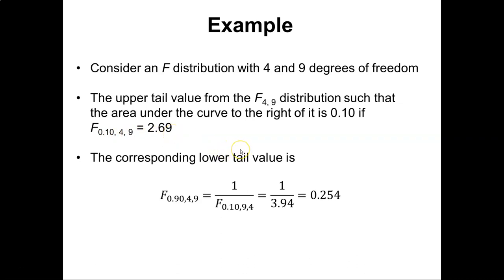We can then think about the lower tail value of that distribution, kind of doing the inverse. The value F at 0.90 levels of significance with four and nine degrees of freedom can be one over its inverse, and we'll get 0.254. We find these values, 2.69, 3.94, from an F table, or we could also use our software to calculate it.